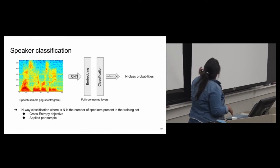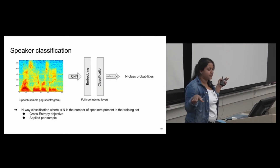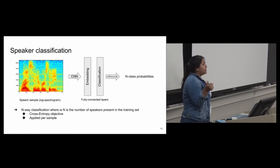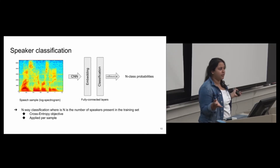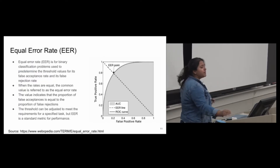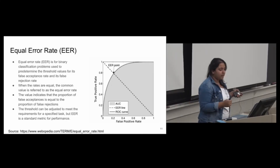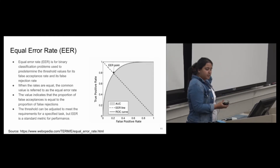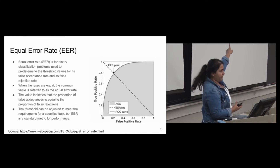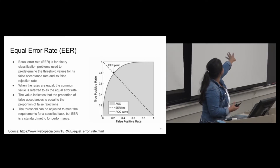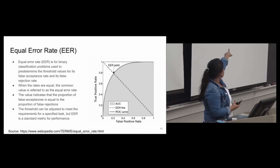So how do we go about speaker verification? Given a recording as a log spectrogram, it passes through the CNN, we have the embedding layer before the classification layer, then we get the N-class probabilities. We use a cross-entropy objective applied per sample. How are we evaluating this verification task? We're using the equal error rate, which is usually for binary classification problems. We need a point where your false positive rate equals your false negative rate — that's the EER point. In your homework, if you get a value of 0.5 that's absolutely random. The lower your EER, the better it is.